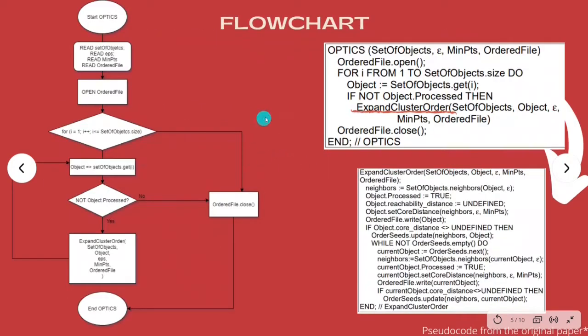We created this flowchart based on the pseudocode, and this is the main loop of OPTICS. OPTICS takes four arguments: the set of objects over which the algorithm is intended to be implemented; epsilon or EPS, which is the radius that defines if the elements are categorized as close or not; the minimum of points or min points, which is a threshold that determines how many points a cluster must contain to be considered as such; and the ordered file, which are the data from which the algorithm will be applied, presumably a database or a dataset.